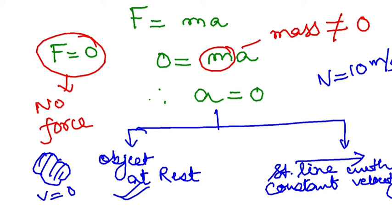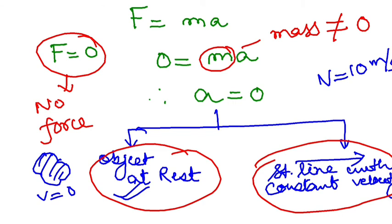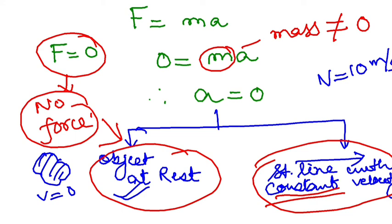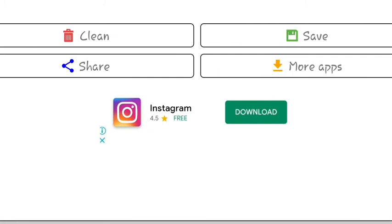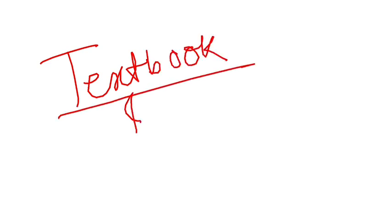These two cases are nothing but Newton's First Law. If there is no force, the object will either be at rest or moving with the same velocity. That is exactly what the First Law states. So we have proved Newton's First Law from the Second Law. Please read the textbook to clarify this concept, as it is very important. If you still have any doubts, you can ask.